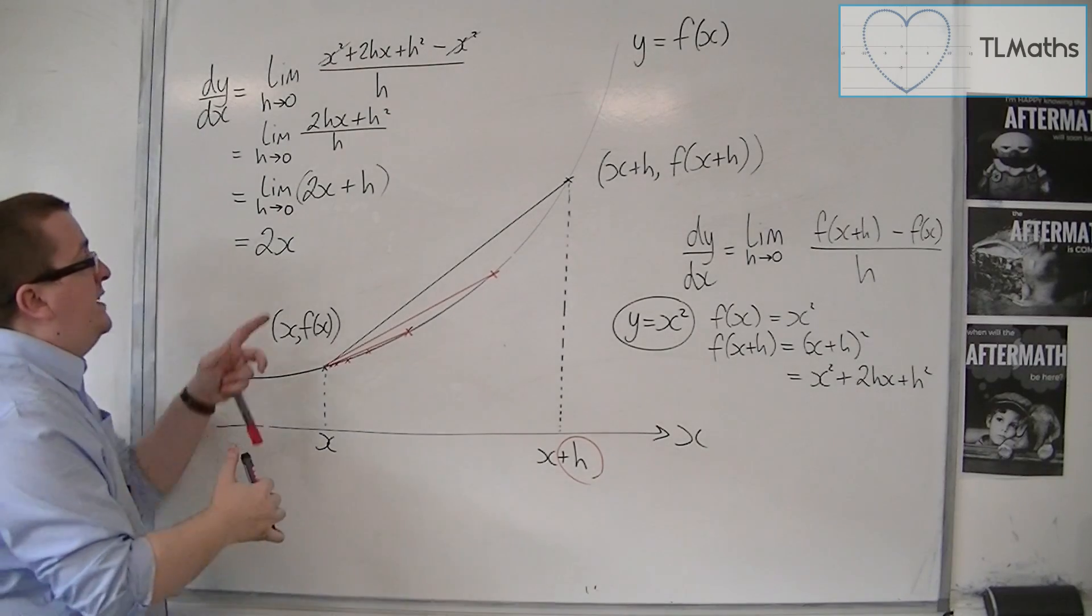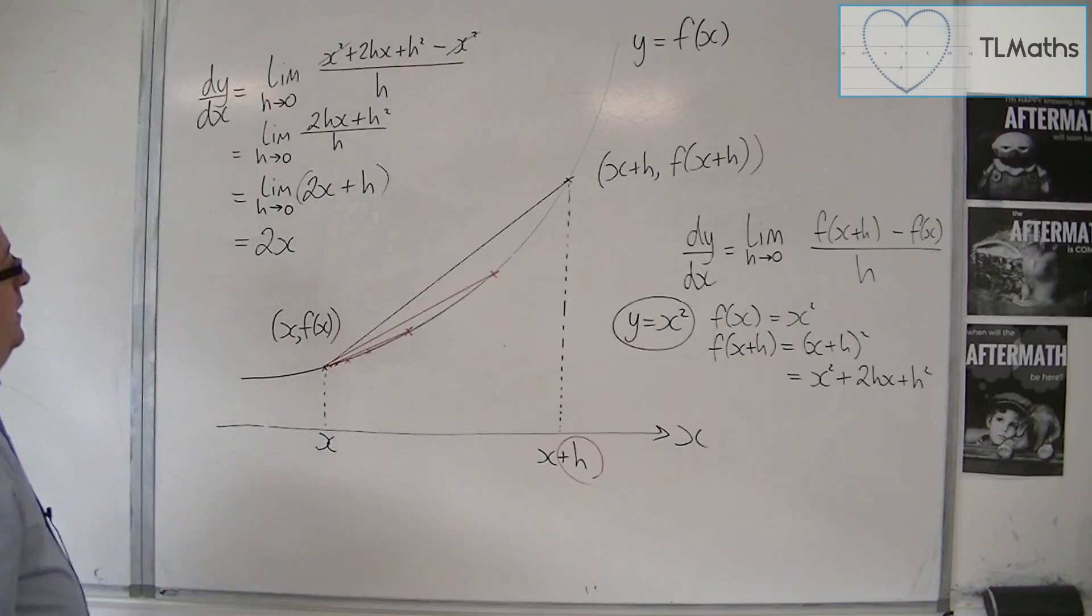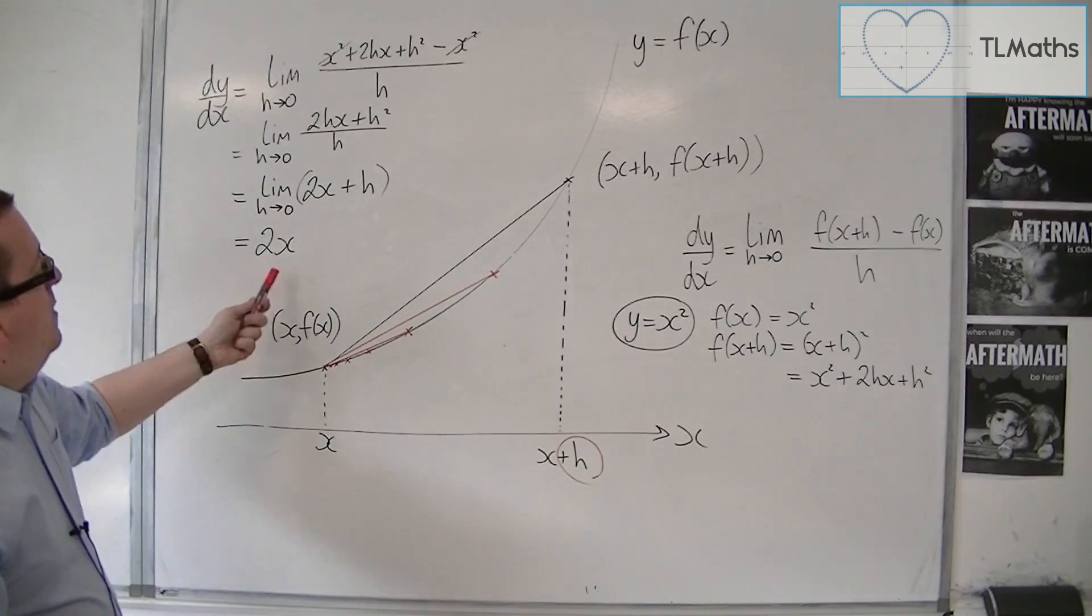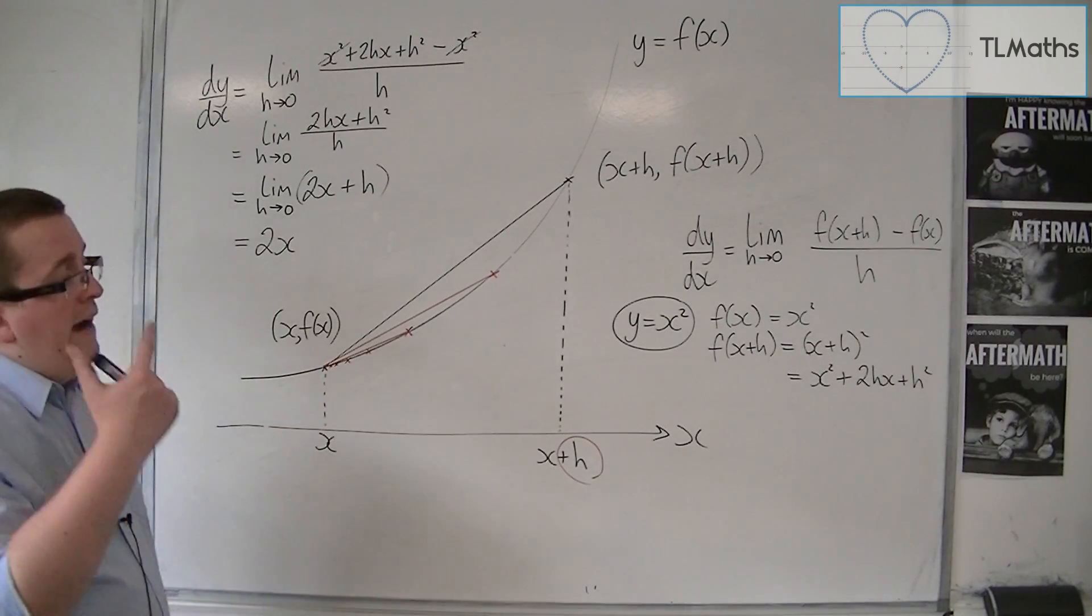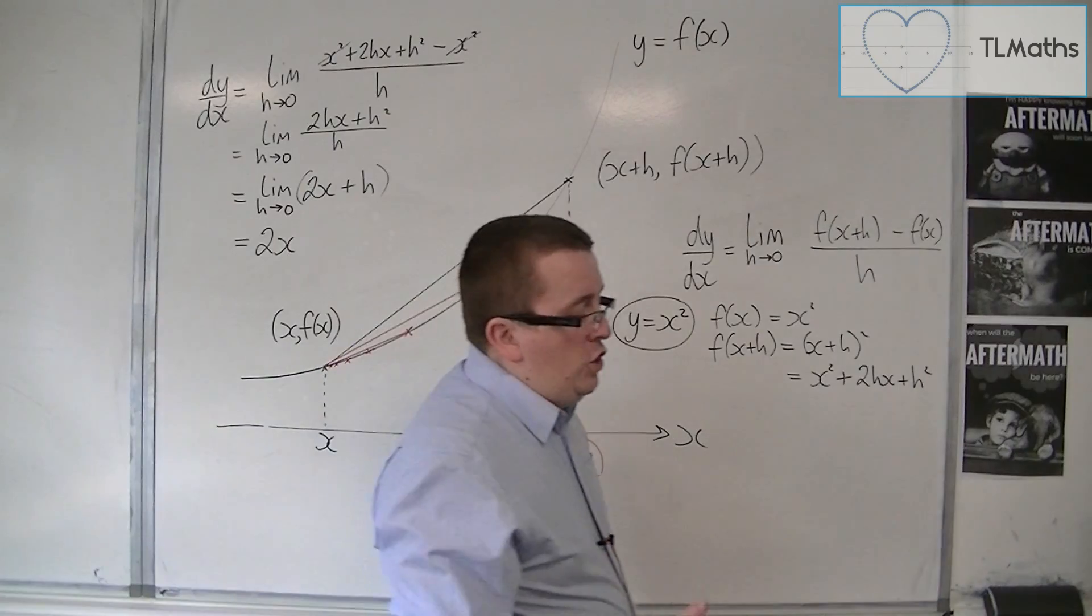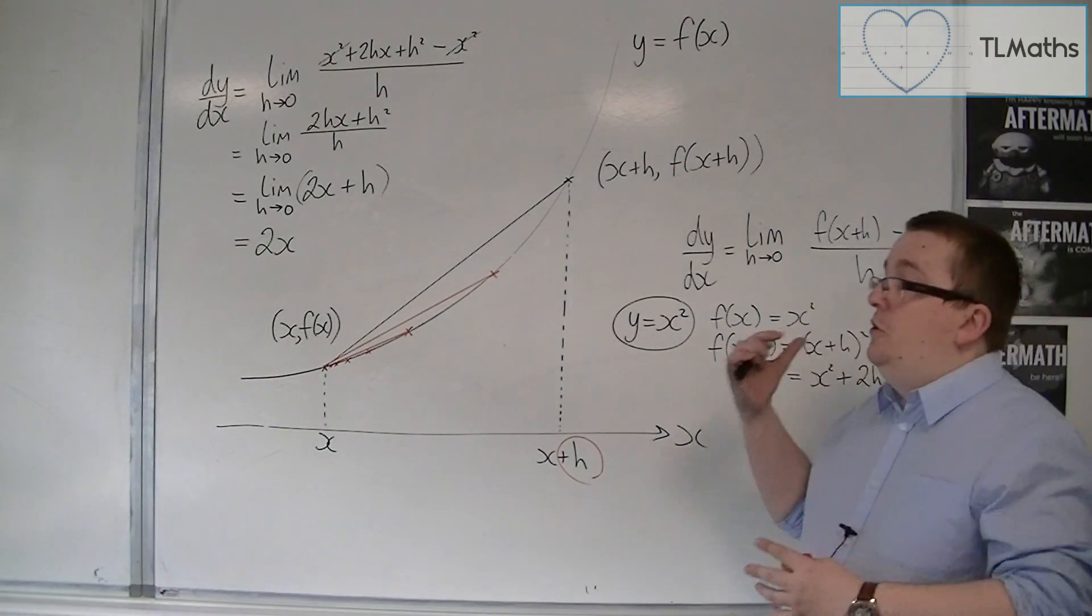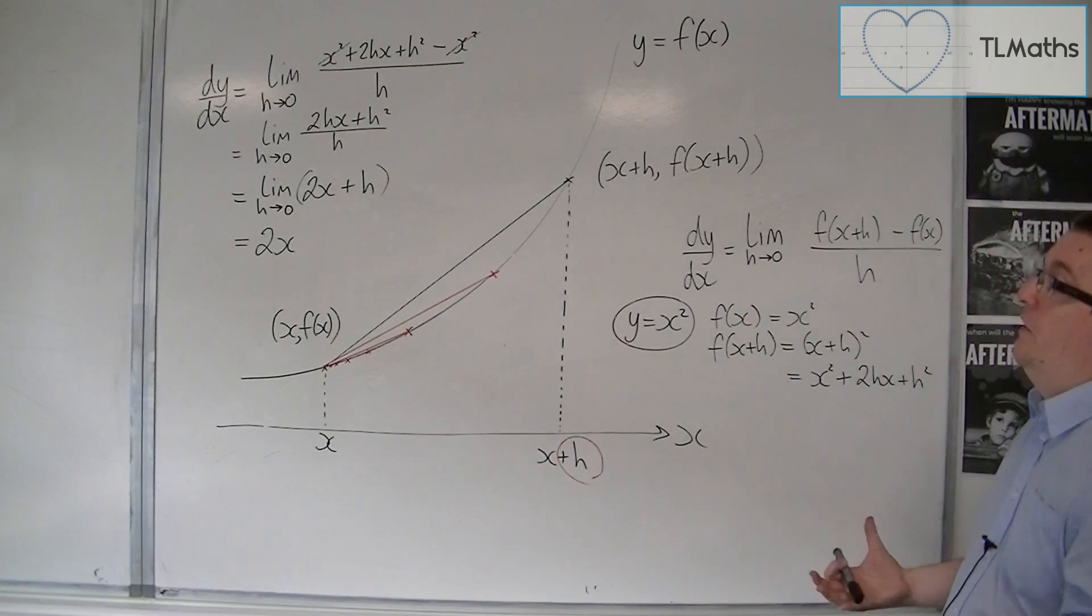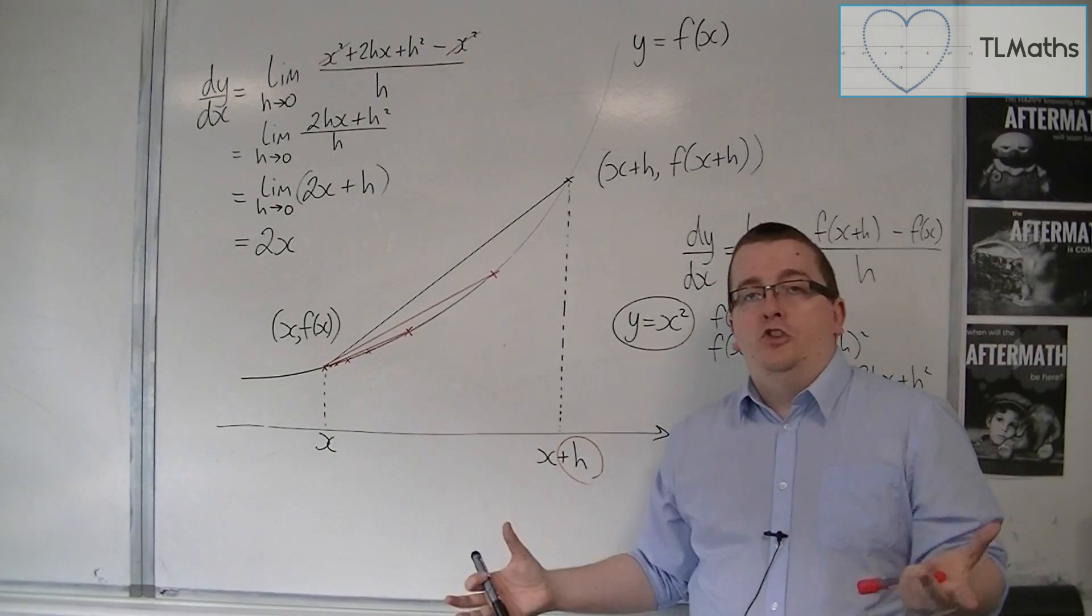So, you can effectively, in that stage, almost substitute h for 0. And so, if y is equal to x squared, then dy by dx is 2x. Now, that's something that we should know from what we've looked at before. And you can do the same process with x cubed or x cubed plus x squared. And you can do it with, really, any function.